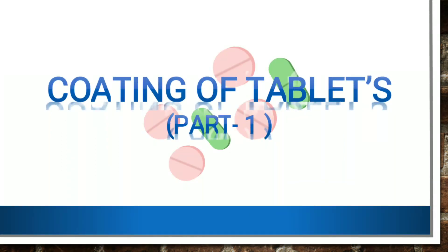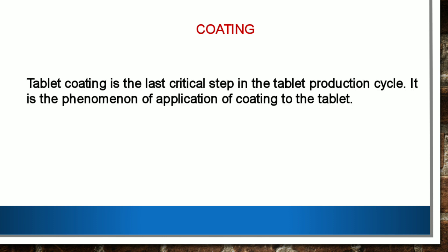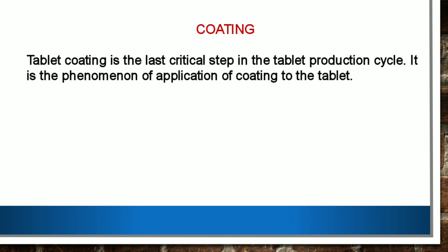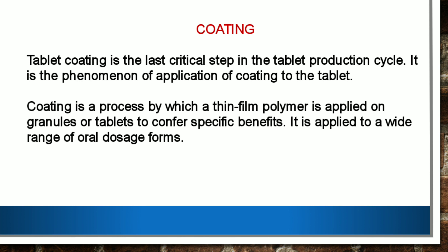Hello students. In today's video on coating of tablets part 1, we are going to see the various introductions related to coating of tablets. You are already aware of what a tablet is and how it is manufactured. Once a tablet is manufactured, the next step is coating. Coating is nothing but the last critical step in the tablet production cycle — the process by which a thin film polymer is applied on granules or tablets to confer specific benefits, applied to a wide range of oral dosage forms.